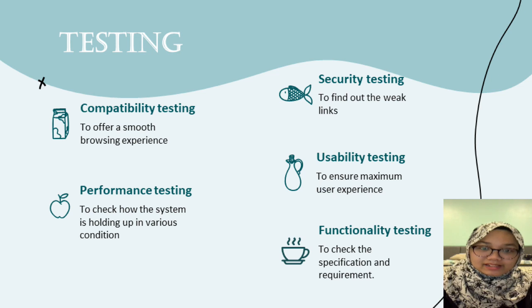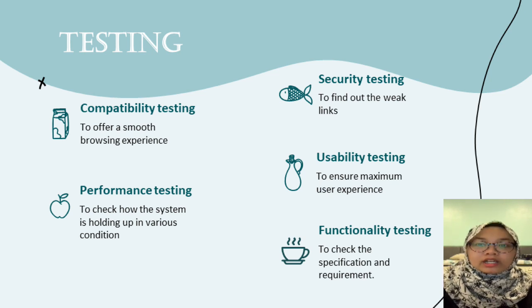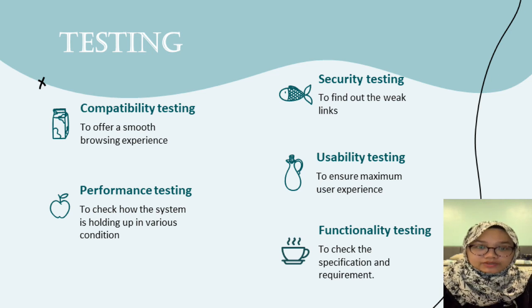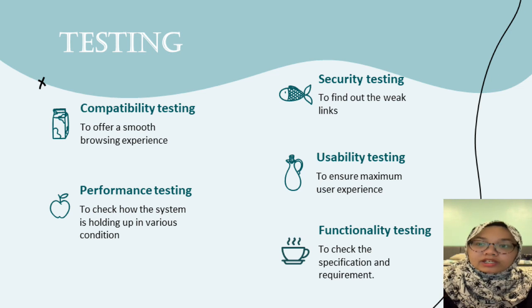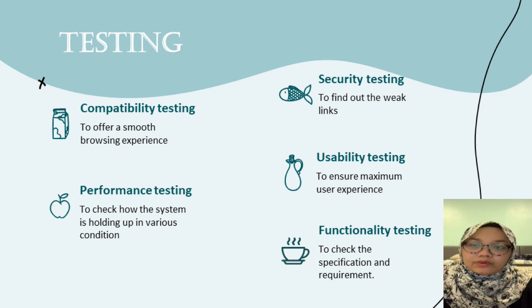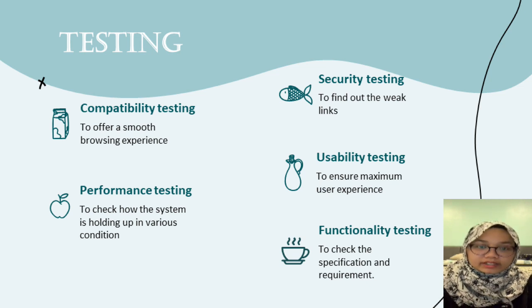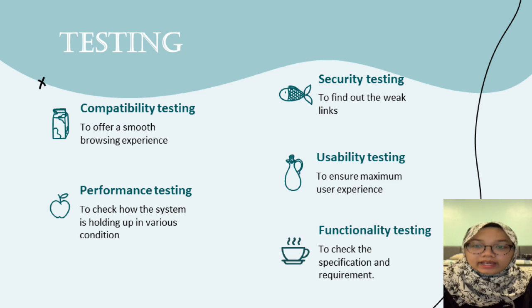Next is usability testing to ensure maximum user experience. We validate the use of user-friendly and meaningful keywords, correct usage of buttons and links for easy navigation, and that the navigation system is easy to understand. In case of internal link breakage, the proper error message should be displayed. Last but not least, we do functionality testing to check specifications and requirements — we validate the database for effective data processing, validate there are no broken links, validate that internal links are appropriately linked, and ensure required and optional fields are properly handled.